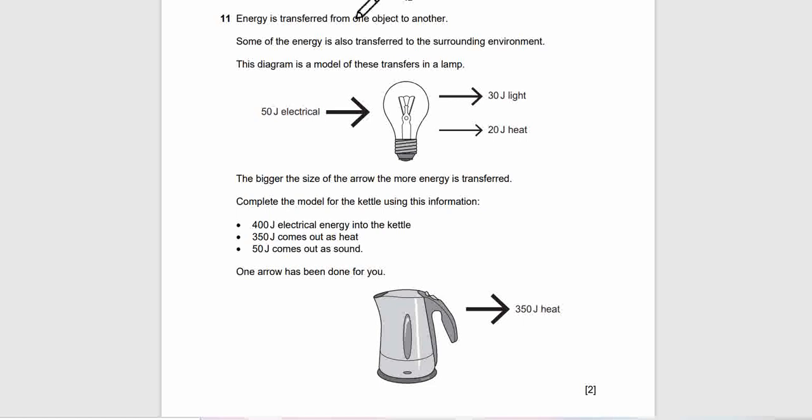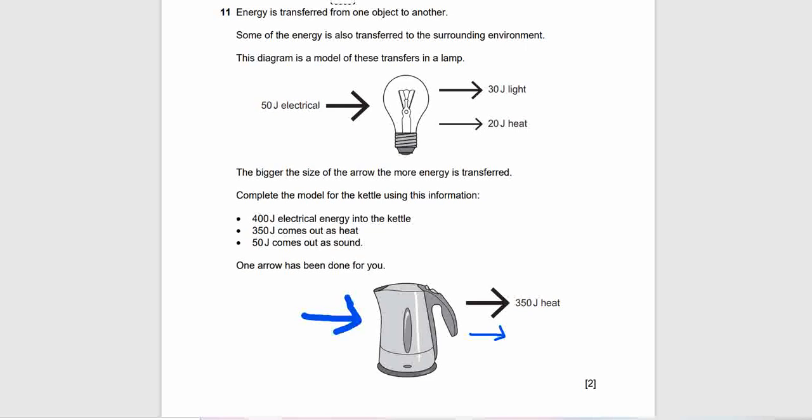Question 11. Energy is transferred from one object to another. Some of the energy is also transferred to the surrounding environment. This diagram is the model of these transfers in a lamp. 50 joules of electrical energy is transferred into 30 joules of light and 20 joules of heat. The bigger the size of the arrow, the more energy is transferred. Complete the model for the candle using this information. 400 joules of electrical energy, 350 joules comes out as heat, 50 joules comes out as light. Make your arrows. 400 joules must be thick and bigger, 350 joules and 50 joules. So this is the correct model.